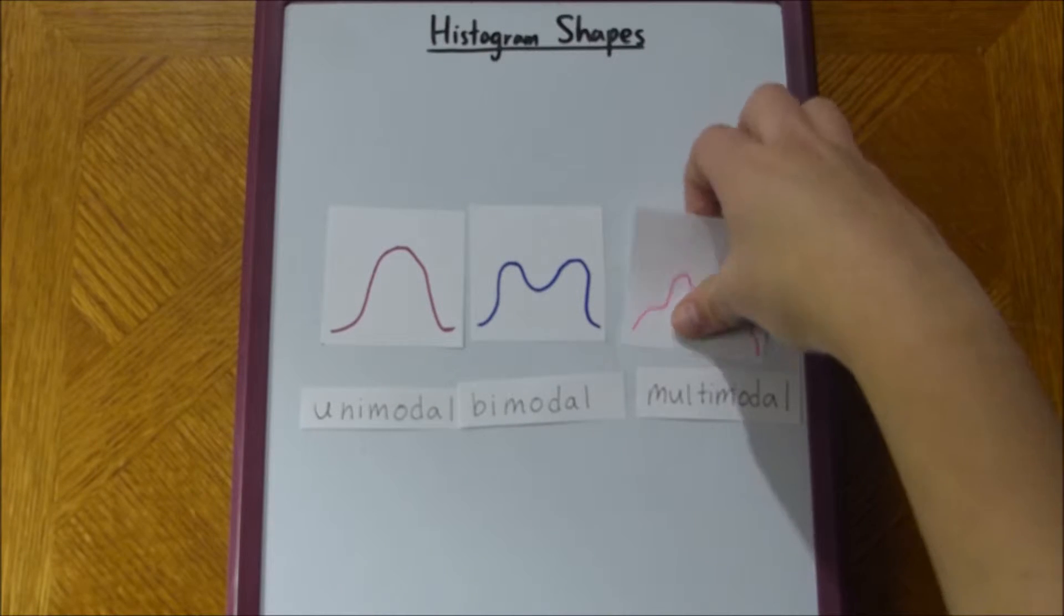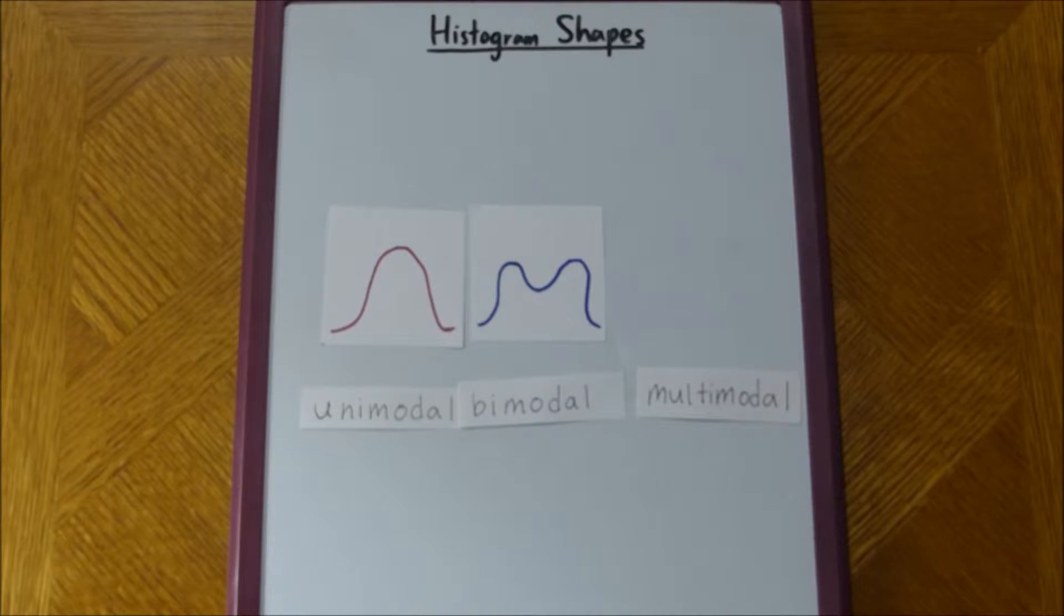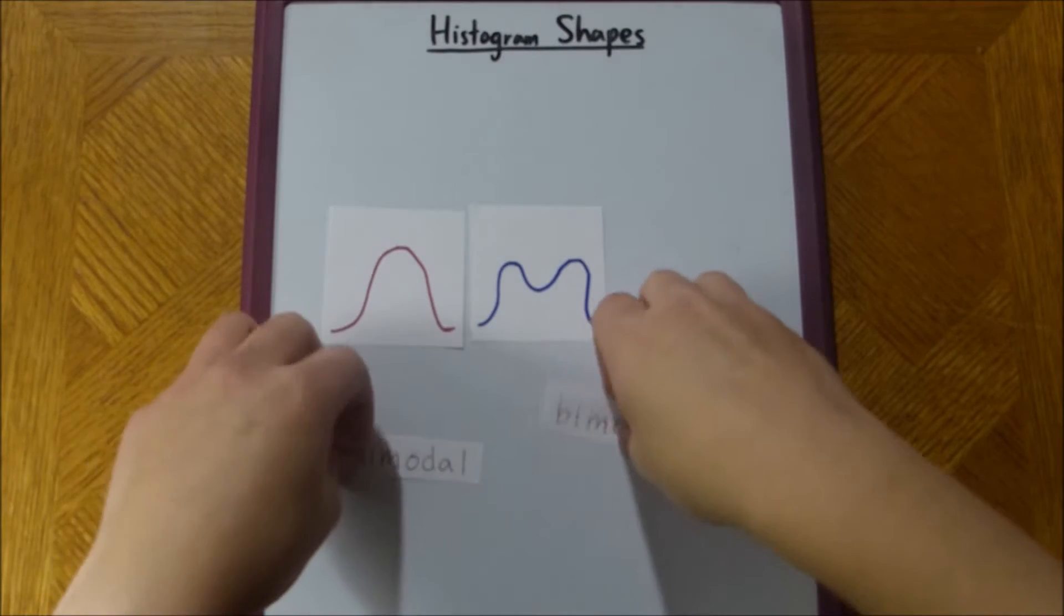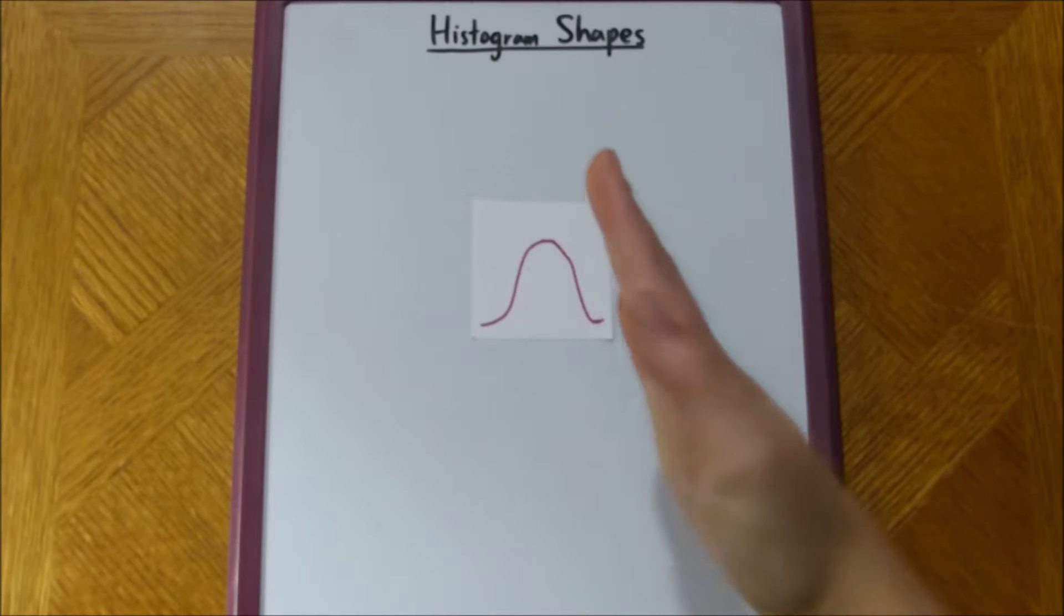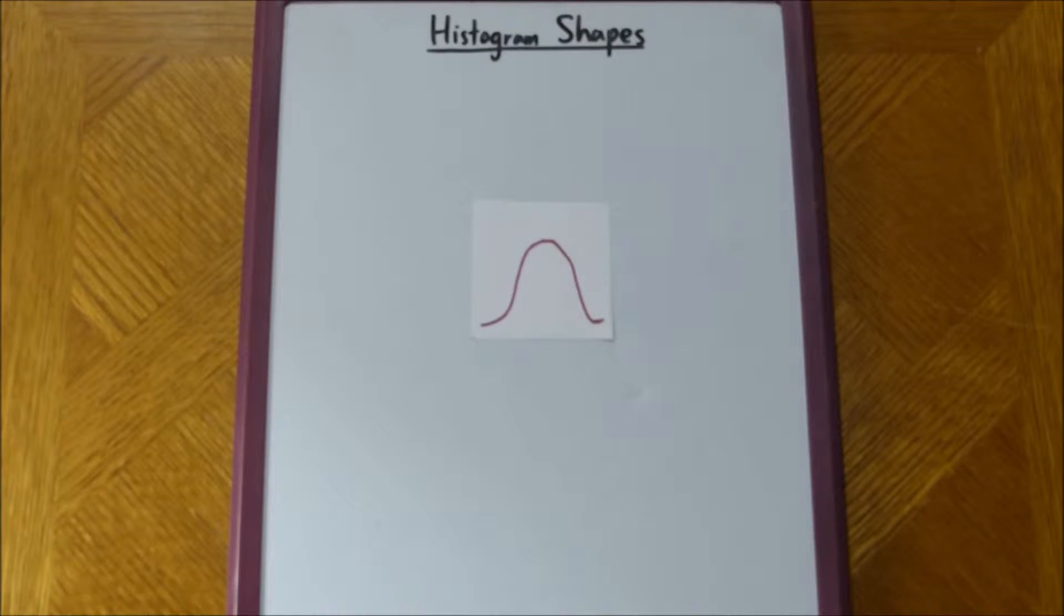Now, let's focus specifically on this sort of normal-looking shape, right? We can see that it's symmetric, and we can see it's symmetric because there's a vertical line of symmetry, such that the part of the histogram to the left of the line is a mirror image of the part to the right.